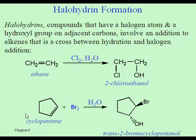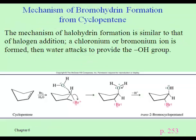If we do this on a cyclic compound, again we get a trans isomer. The bromine adds first to make the bromonium ion, and then the OH group comes in from the opposite side, so you do get the trans isomer. Your book shows this same reaction in the figure from page 253. We get trans, with the halogen and the OH group adjacent to one another.